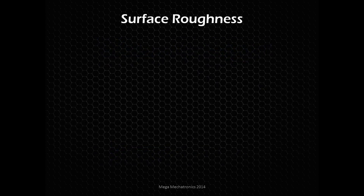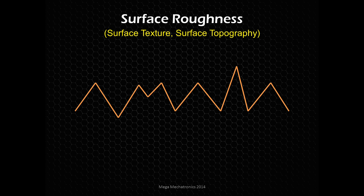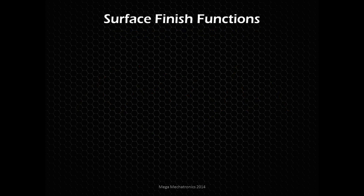Looking at surface roughness — which can also be called surface texture or surface topography — some attributes: this is the micro irregularities, and we have our peaks and our valleys for these micro irregularities. This is probably an important thing we need to cover when looking at surface finish, because this topic goes very deep, as I'll show you later with the different types and parameters, or ways of quantifying surface finish. There are a lot of different techniques.